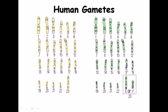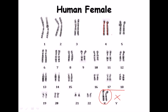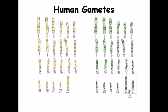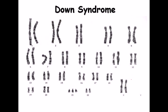Looking at human gametes rather than the full diploid or zygotic chromosome number, we find that gametes consist of only one set of chromosomes — they are haploid. Each gamete contains 23 chromosomes, not 46. A gamete will contain either one X or one Y chromosome, depending on what segregation occurs during gamete formation.